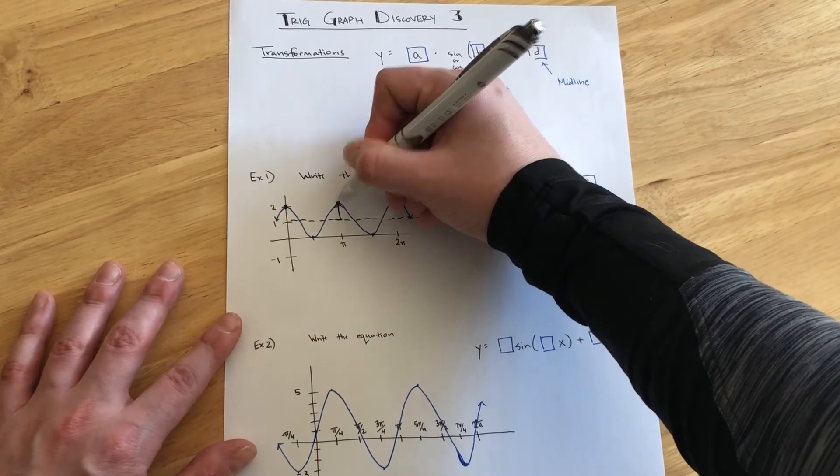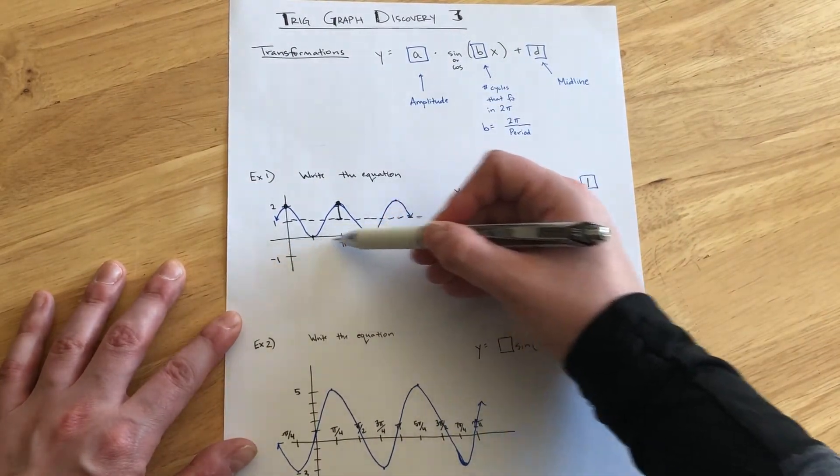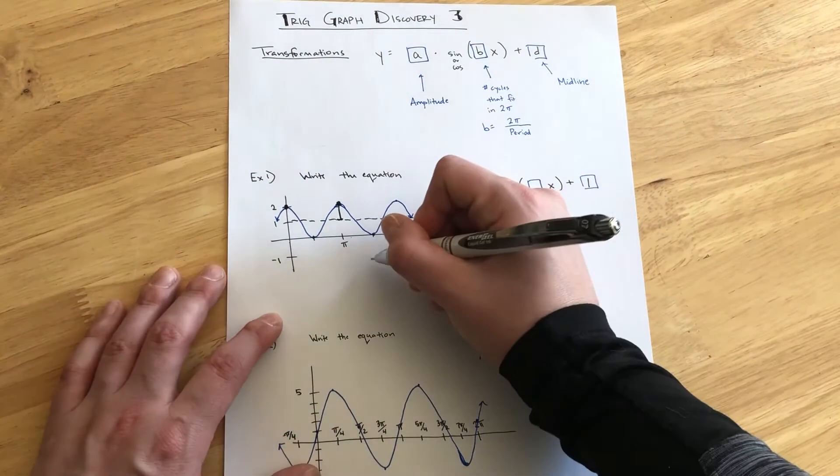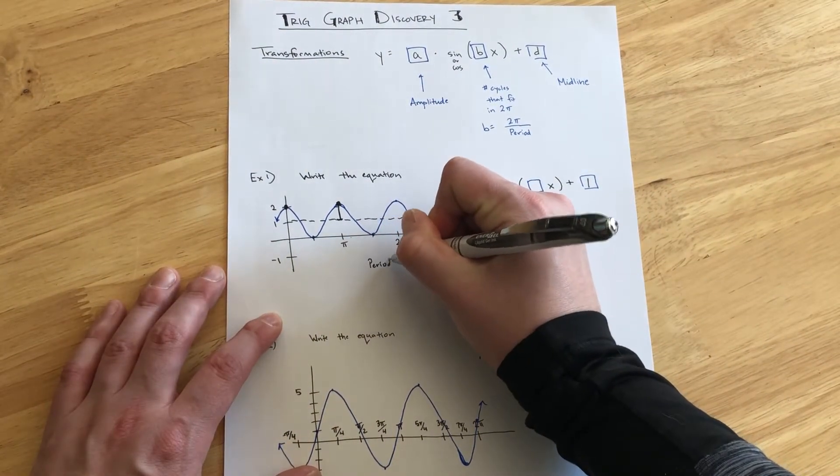So, peak to peak, that is a space of 1π. The period of this function is 1π.